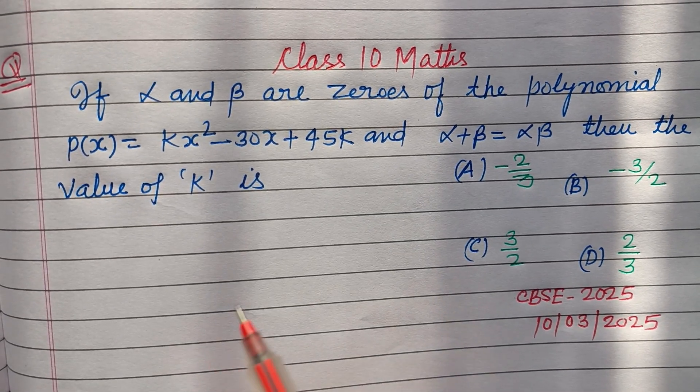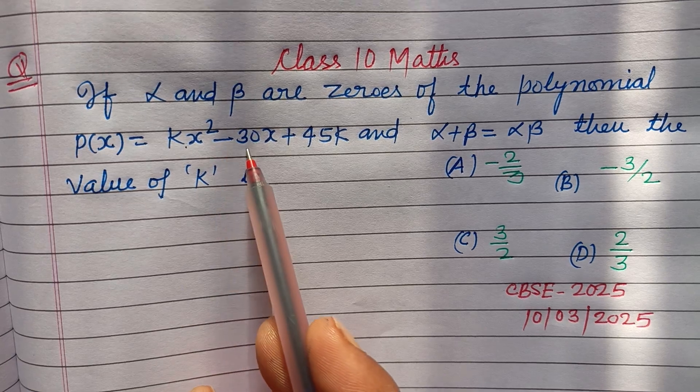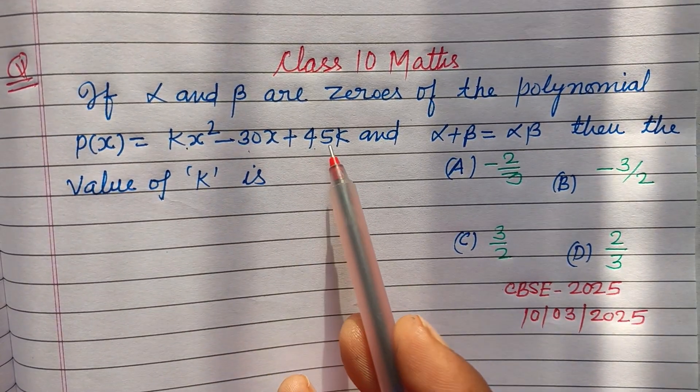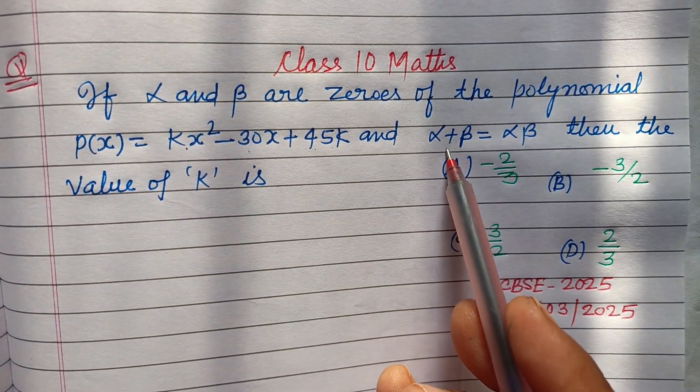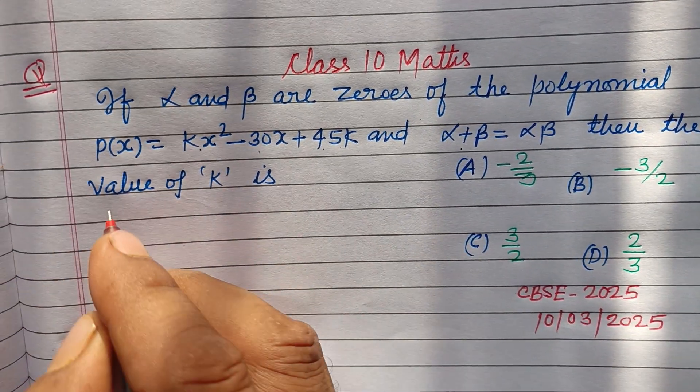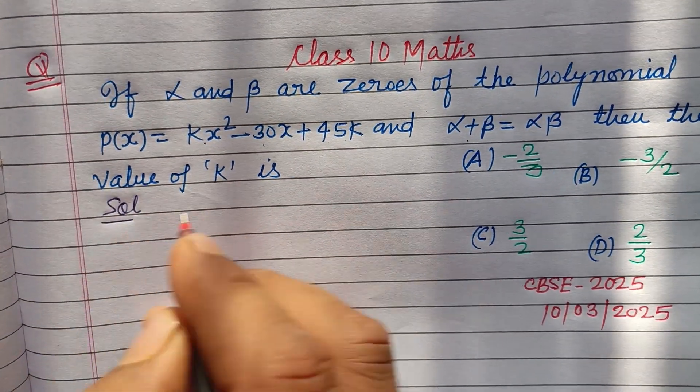If α and β are zeros of the polynomial p(x) = kx² - 30x + 45k, and α + β = αβ, then the value of k is. So students, here the polynomial is given to us: p(x) = kx² - 30x + 45k.